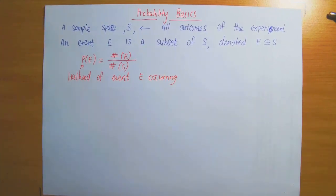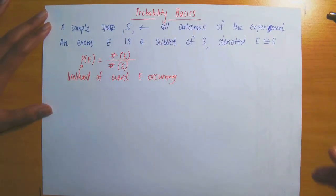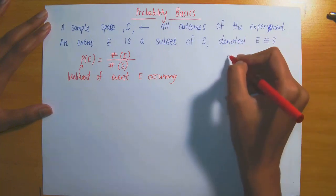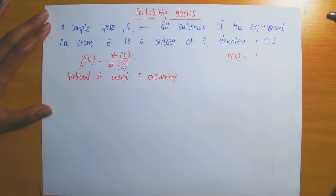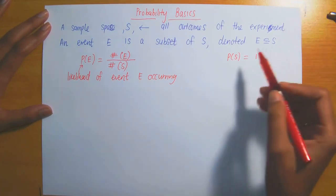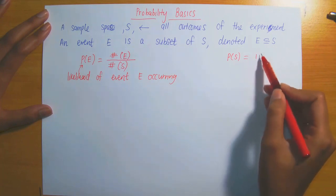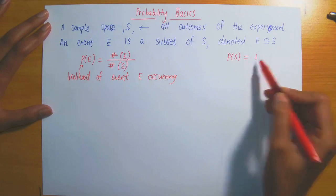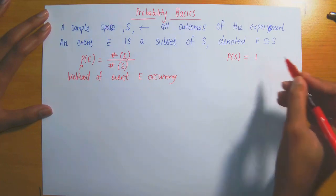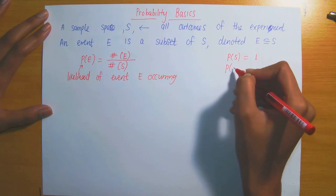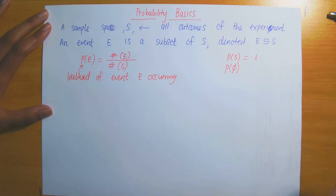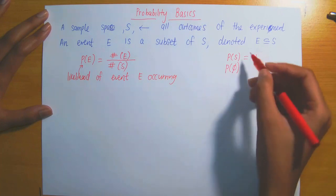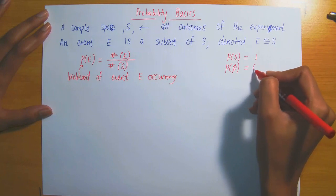Since S consists of all possible outcomes of the experiment, the probability of S occurring is actually equal to 1. Because since this is the list of everything, we know that something is definitely going to occur, so we assign that probability a measure of 1. The probability of the empty set — the set consisting of no elements — we give a measure of 0.